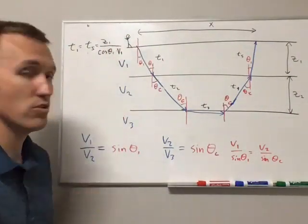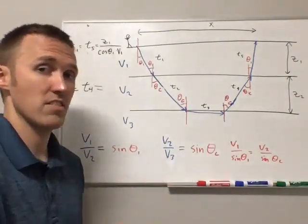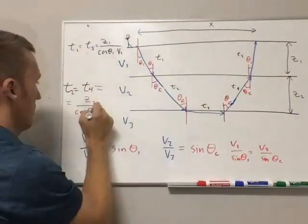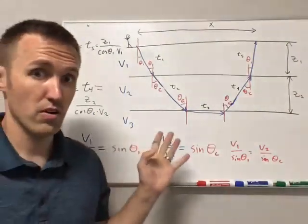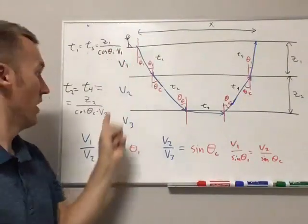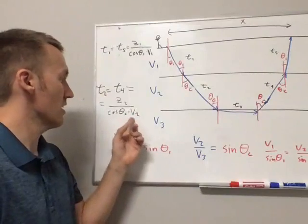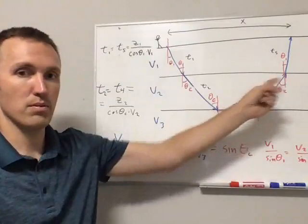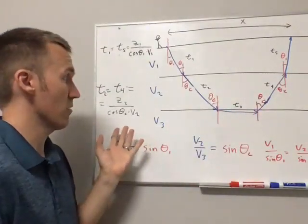So now we have our layer two, t2 and t4, the distance traveled in layer two divided by the velocity of layer two. So we have z2 divided by cosine theta c times v2. So our total travel time so far is going to be twice, two times z1 divided by cosine theta one v1, and then we have two times z2 divided by cosine theta c times v2. And again, the two here is coming from the fact that we're traveling both down and up. So we're counting for both of those in a single term, because the terms are the same. Okay.